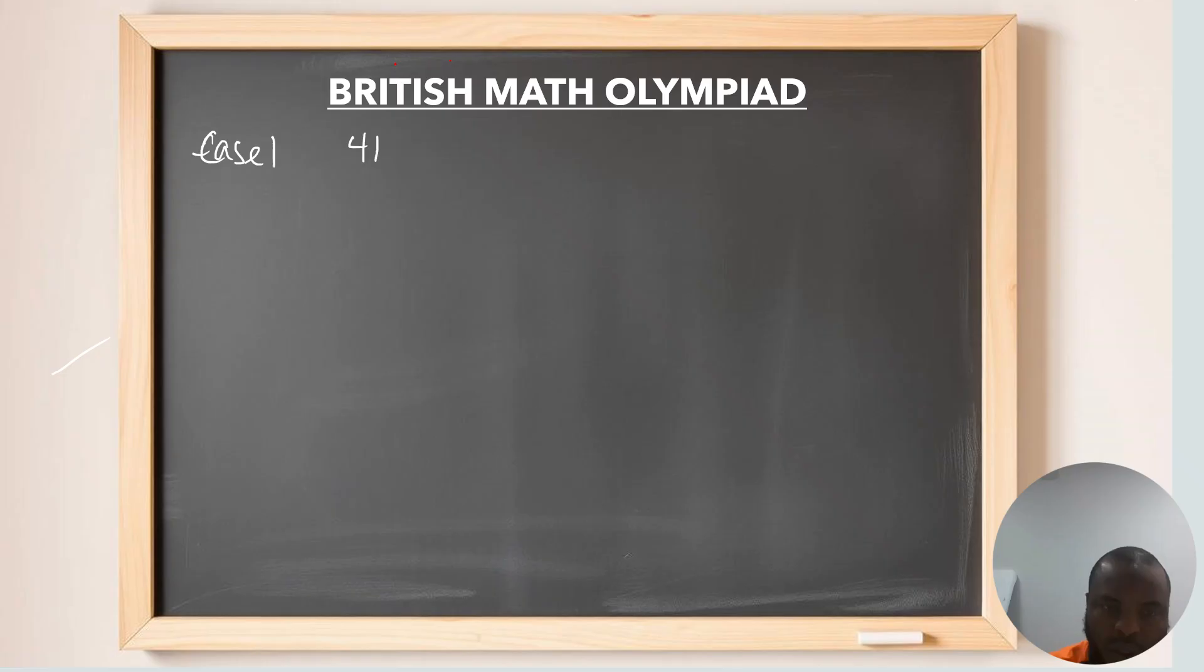We have case 1. Since we have that 41 is the same thing as 16 plus 25, and we don't know which of these two values. And here we have a squared plus b squared equals to 41. So, we can say that a is the same thing as 4 squared. And b squared is going to be 5 squared, which is 41. Therefore, here we can say that a is 4 and b is 5. This is case number 1.